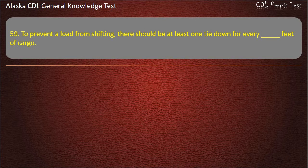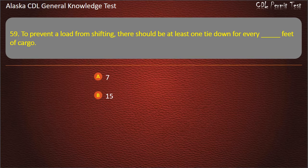Question 59. To prevent a load from shifting, there should be at least one tie-down for every how many feet of cargo? Seven, fifteen, ten, or two. Answer: 10 feet.